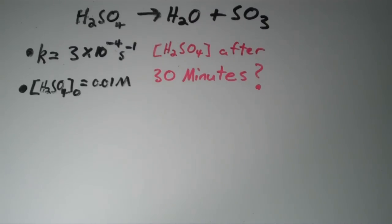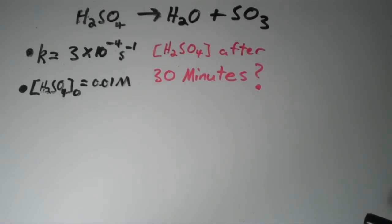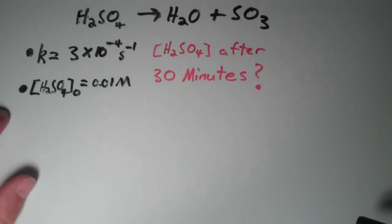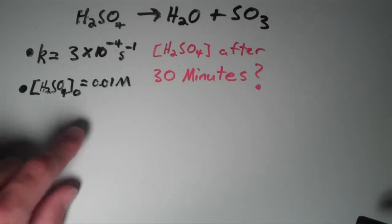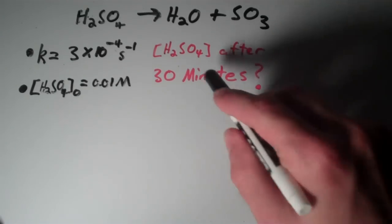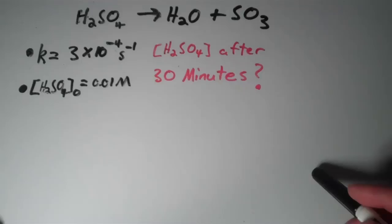This is going to be a problem where we use the integrated rate law to determine the concentration of a reactant at a certain time. The problem says suppose we have the following reaction: H2SO4 yields H2O plus SO3. The rate constant k for this reaction is 3 times 10 to the negative 4 reciprocal seconds, and the initial concentration of H2SO4 is 0.01 molar. What the problem is asking for is the concentration of H2SO4 after 30 minutes.